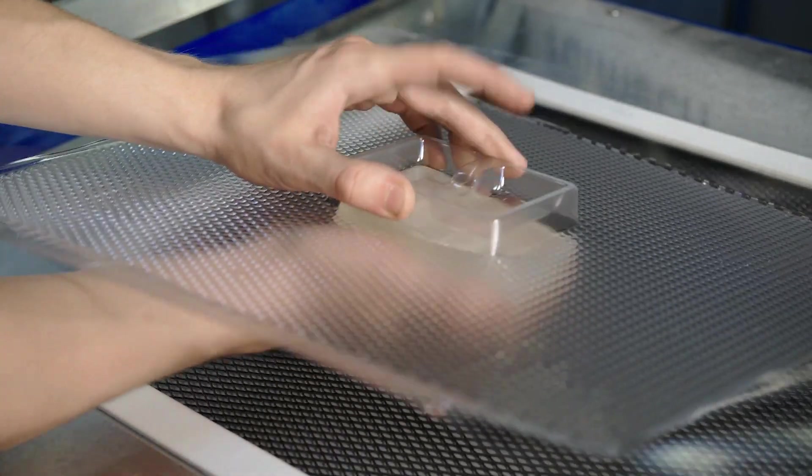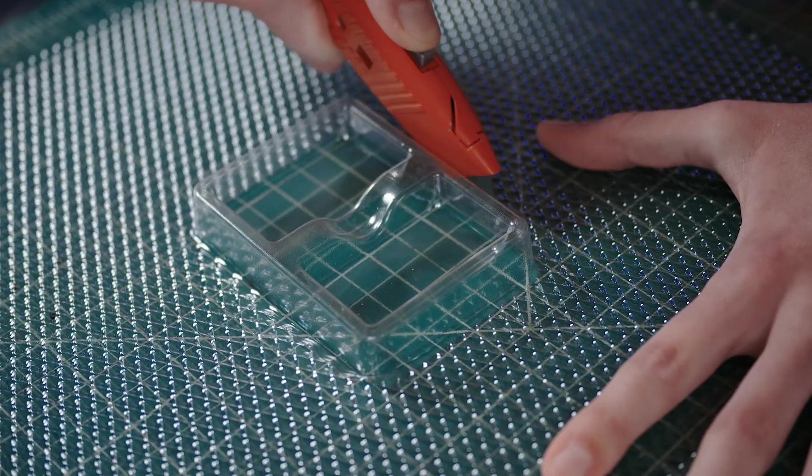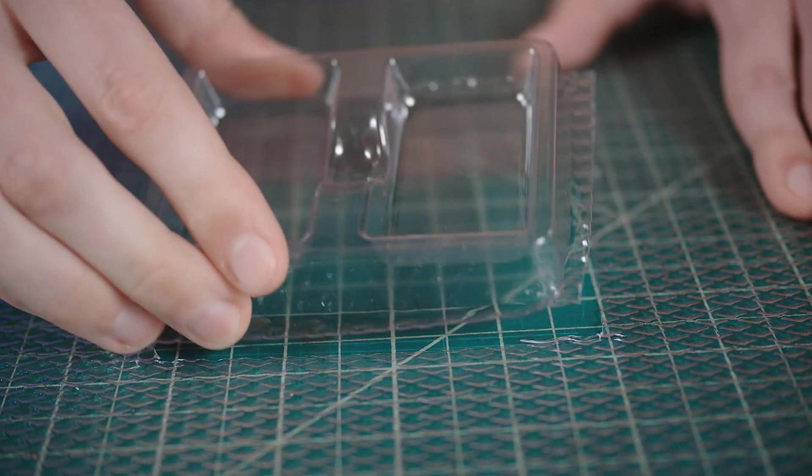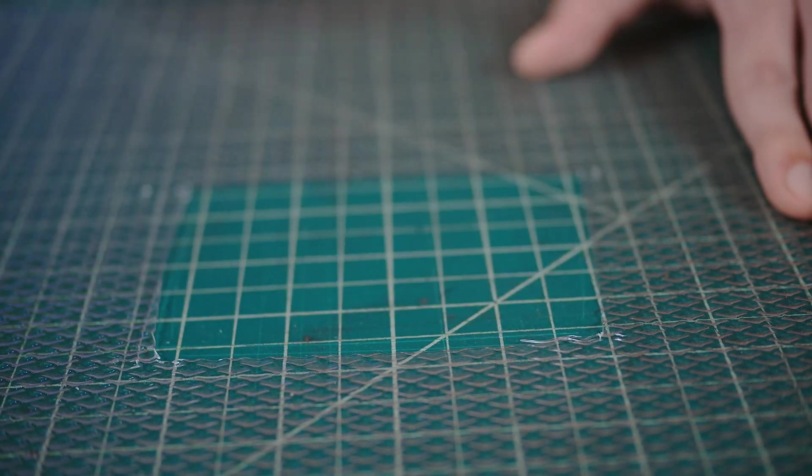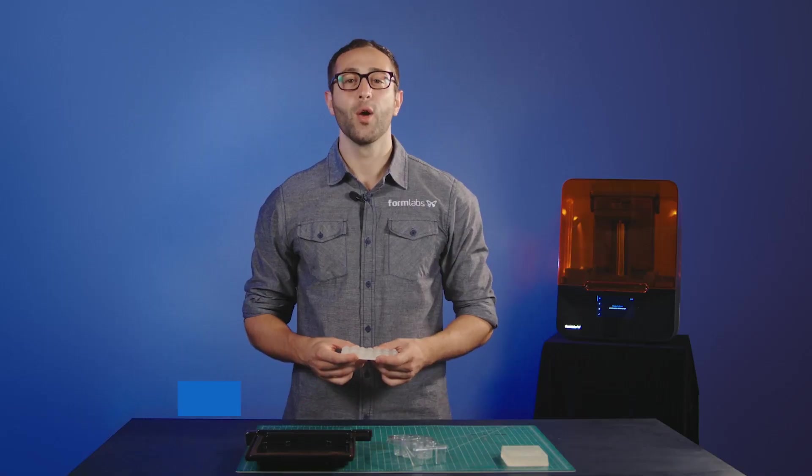Most vacuum formable plastics can be easily trimmed either by hand with a sharp knife or using a machine tool like a router or a mill.